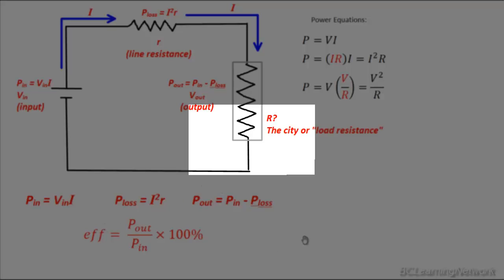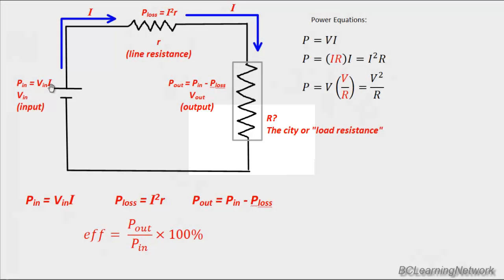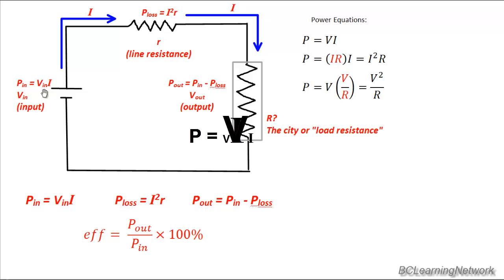A couple more quick comments before you try some sample problems. The values of current and input voltage matter greatly. Current creates heat — the more current flowing through that line, the more heat is generated, and heat represents power loss. If we want to deliver 100,000 watts to a city, we could do it at a high current and low voltage, or a high voltage and low current. You're always better off delivering at a high voltage and low current, because the losses depend directly on the square of the current. So to minimize losses, deliver power at a low current and a high voltage.